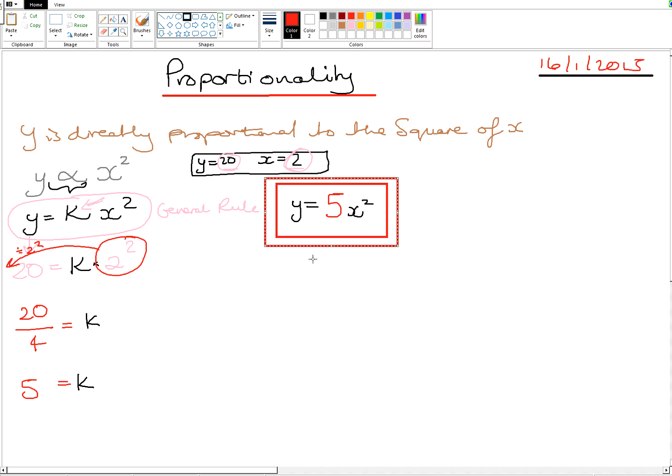So Y is equal to 5X squared. That is our general rule. So this is our general rule over here, and this one here is our specific rule. The specific rule means that it is what we're going to be using to work out all of our answers.